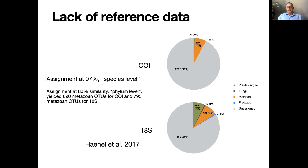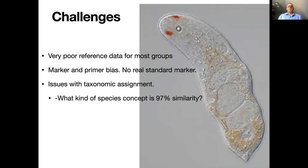Especially for the CO1 — so that is of course a problem. And this is due to the fact that there is not enough reference data, so there's nothing to match against. We have seen already that we have a bias in the markers so that the markers give a different picture of the community. And this might be due to the marker itself, or it might be just the primer — that the primer doesn't work for a particular group of animals.